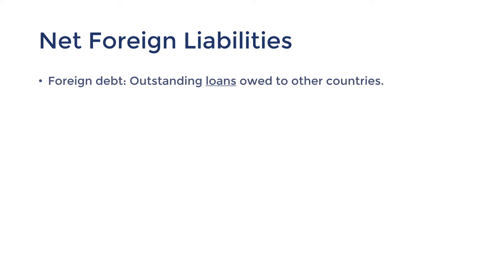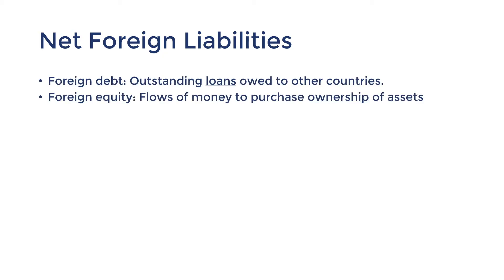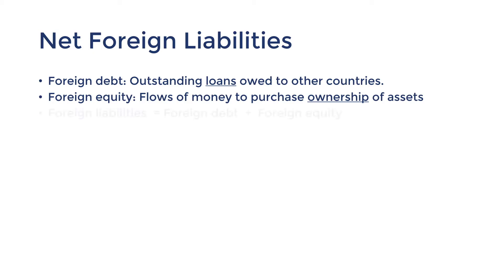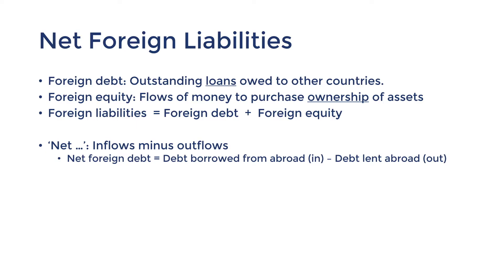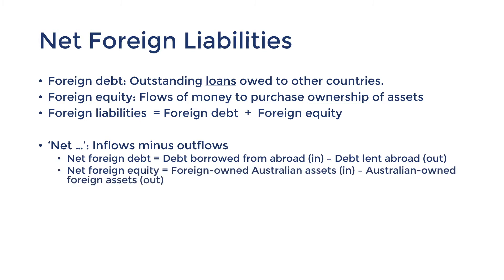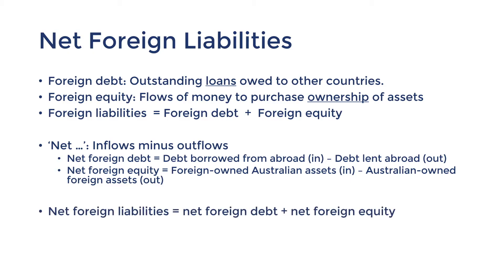Now here's some new content: net foreign liabilities and its relationship with foreign debt and foreign equity. Debt refers to loans. Equity refers to the ownership of assets — buying and selling shares would be examples of equity flows. Liabilities refers to the sum of debt and equity. The word 'net' means that something has been subtracted — in this context, it means we're measuring money flowing in minus money flowing out. Net foreign liabilities is the sum of net foreign debt and net foreign equity, or all debt and equity inflows minus the outflows.